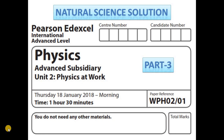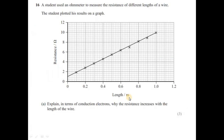Welcome to the third video of Physics Possible Solution. This is Edexcel IAL Unit 2, January 2018. Question 16: a student used an ohmmeter to measure the resistance of different lengths of a wire. The student plotted his results on a graph. Explain in terms of conduction electrons why resistance increases with the length of the wire.